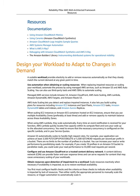AWS Auto Scaling lets you detect and replace impaired instances. It also lets you build scaling plans for resources including Amazon EC2 instances and Spot Fleets, Amazon ECS Tasks, Amazon DynamoDB Tables and Indexes, and Amazon Aurora Replicas. When scaling EC2 instances, ensure that you use multiple availability zones, preferably at least three, and add or remove capacity to maintain balance across these availability zones. When using AWS Lambda, they scale automatically — every time an event notification is received for your function, AWS Lambda quickly locates free capacity within its compute fleet and runs your code up to the allocated concurrency. You need to ensure that the necessary concurrency is configured on the specific Lambda and in your service quotas.